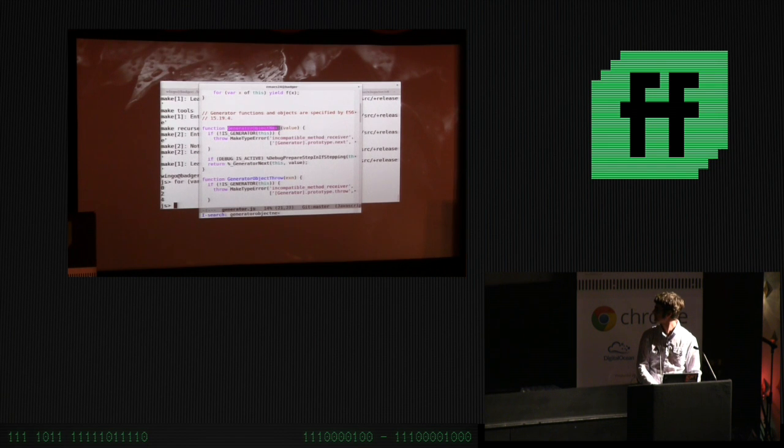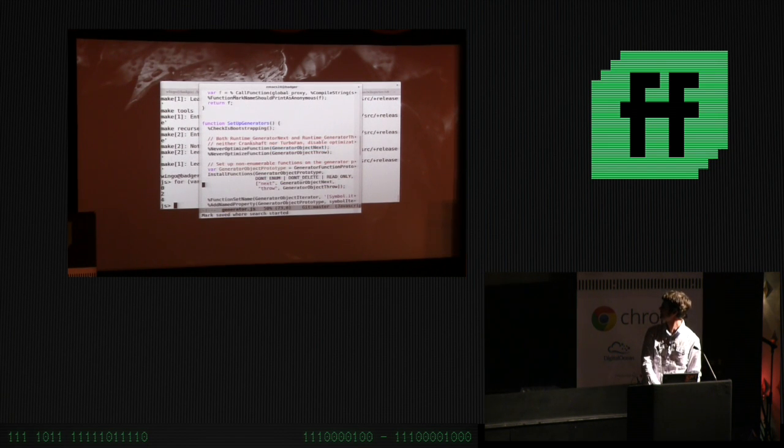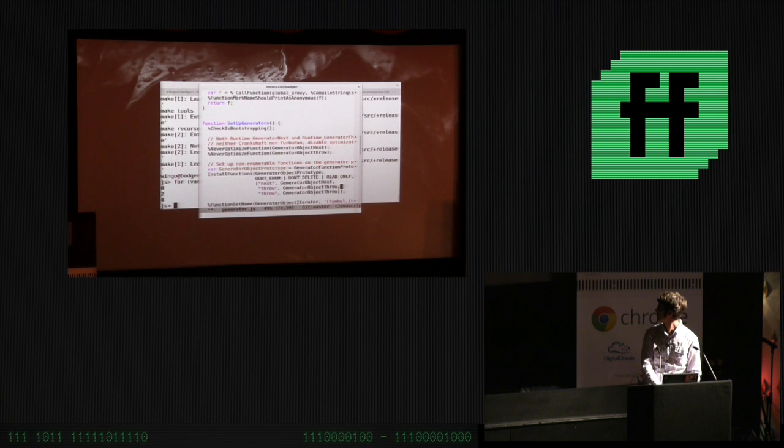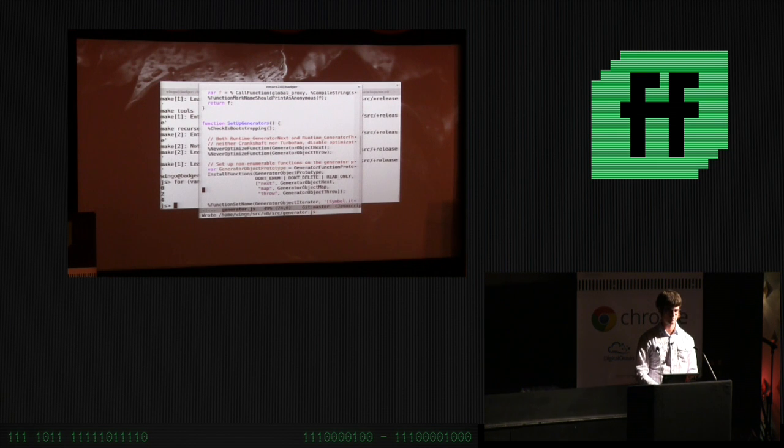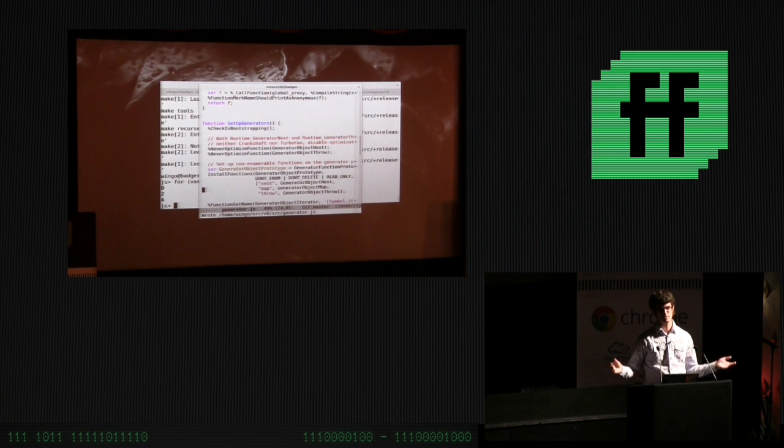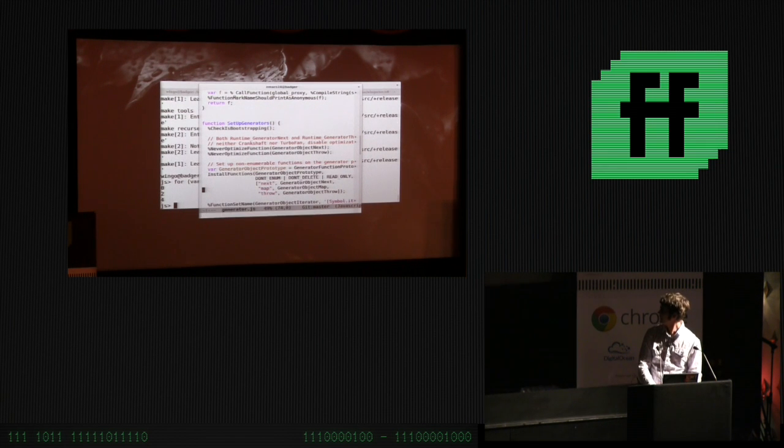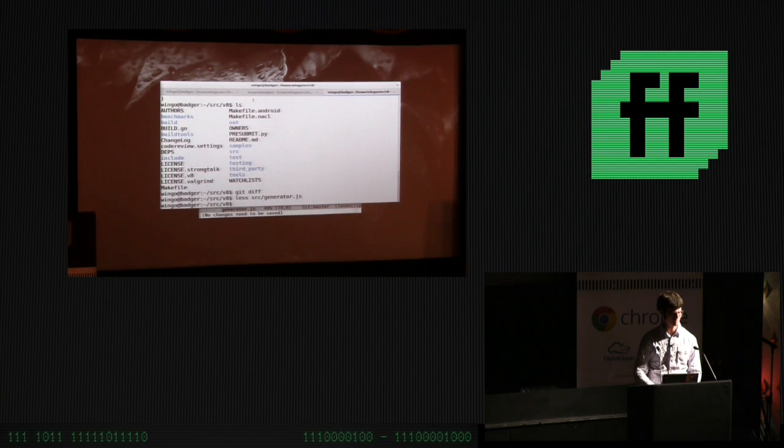There's the percent signs prefixing some of these things. Y'all have probably seen this before. If you've ever had somebody in Node ask you to run something with allow native syntax, don't do that. Because it's so dangerous. This generator next thing reconstructs a stack frame and an instruction pointer and jumps into the middle. This is knife throwing. These primitives, these percent things can be used to compose secure abstractions, but they are not themselves secure abstractions. So that's a bad thing. Generator object next. If I search the next time I see it, it says never optimize it, and then install it on the generator object prototype. I'm just going to add map down here.